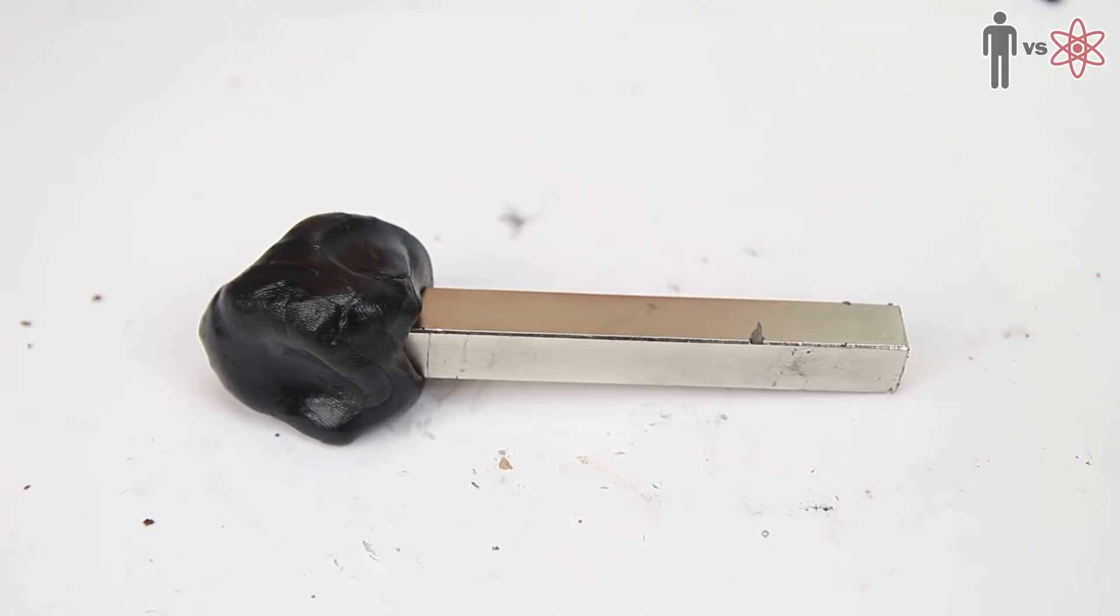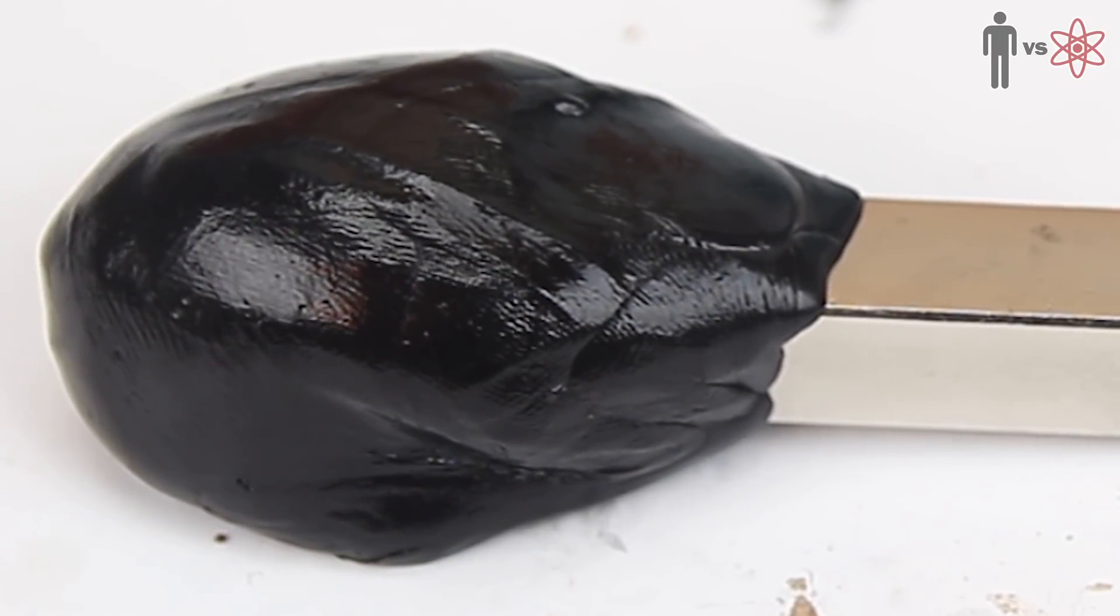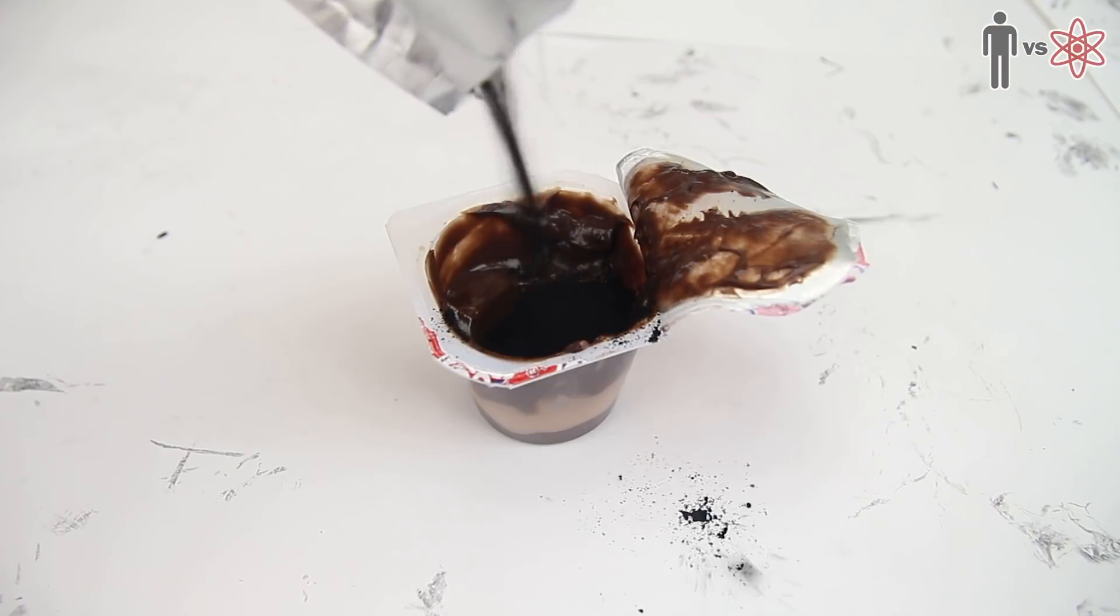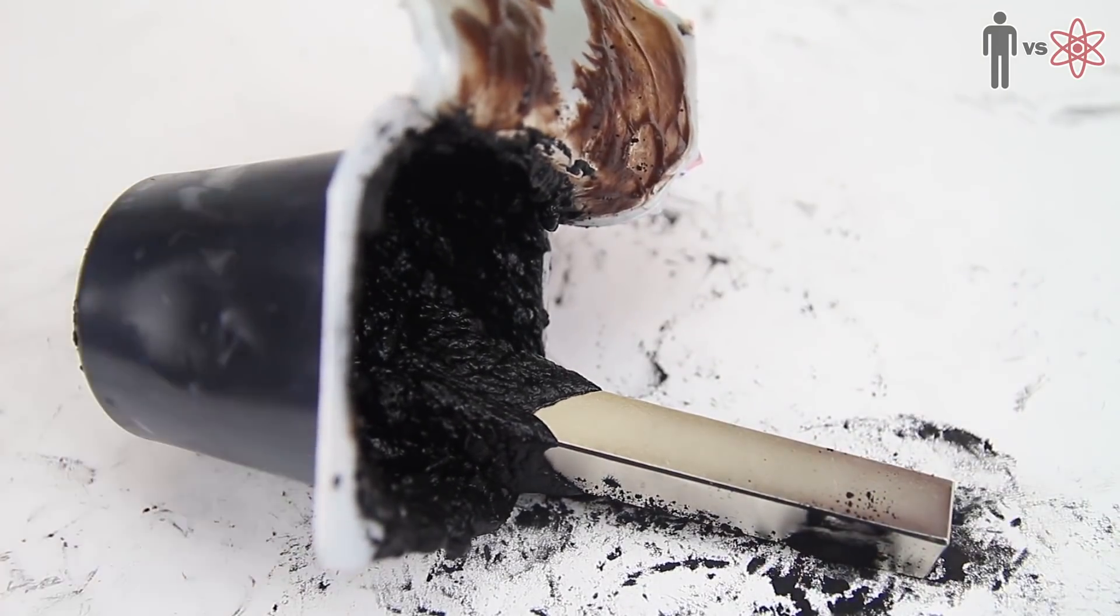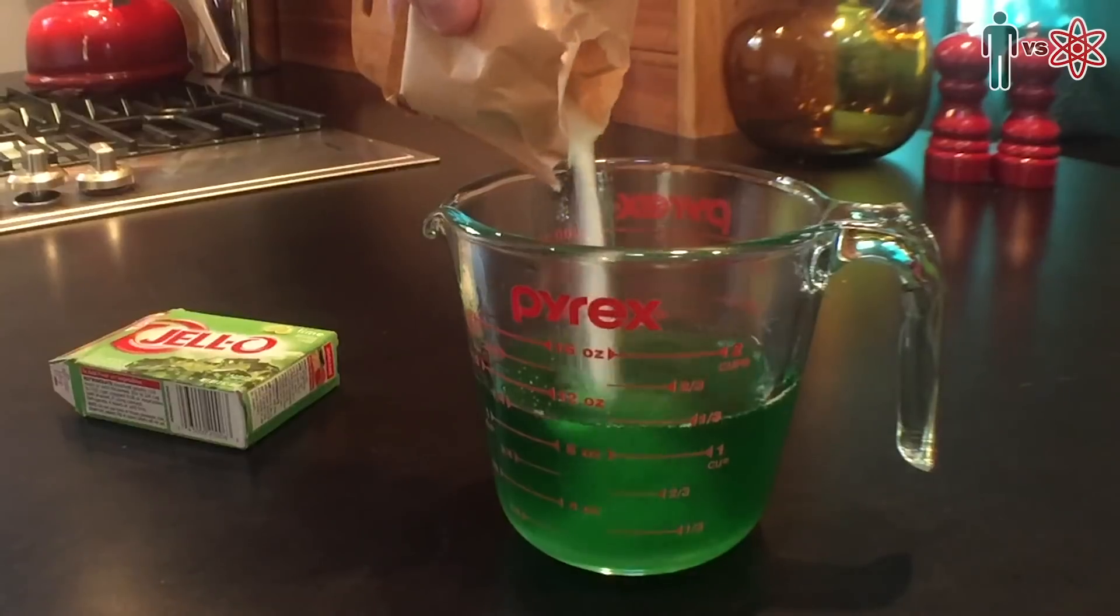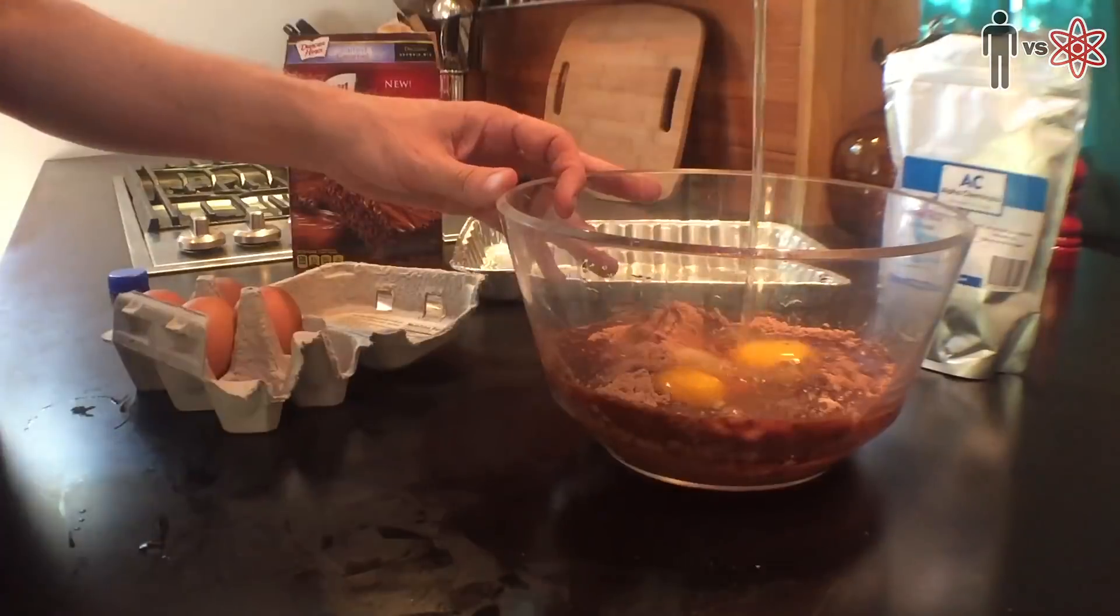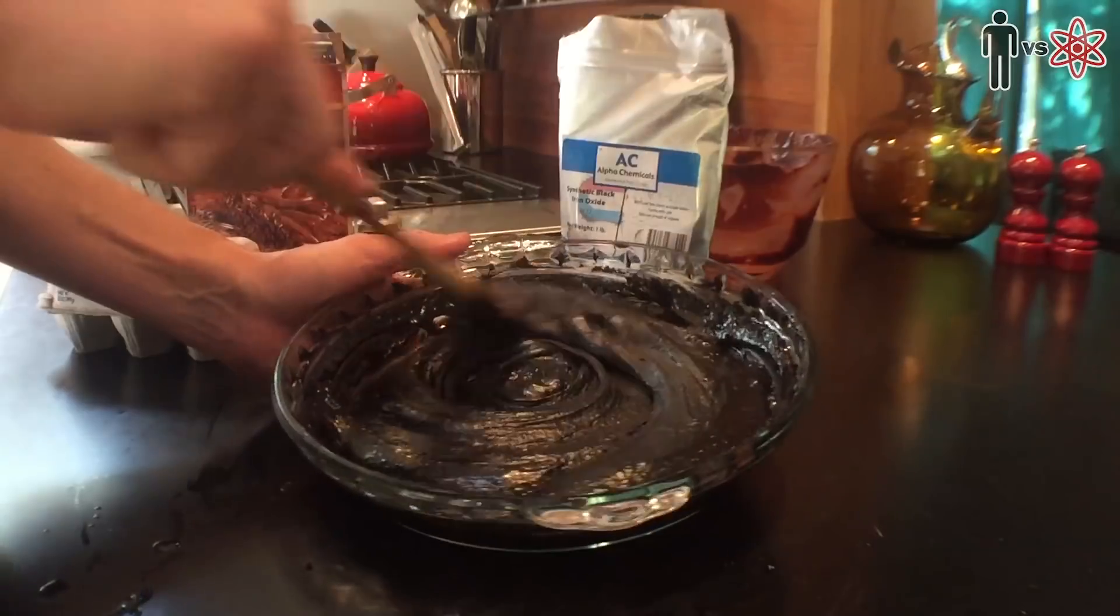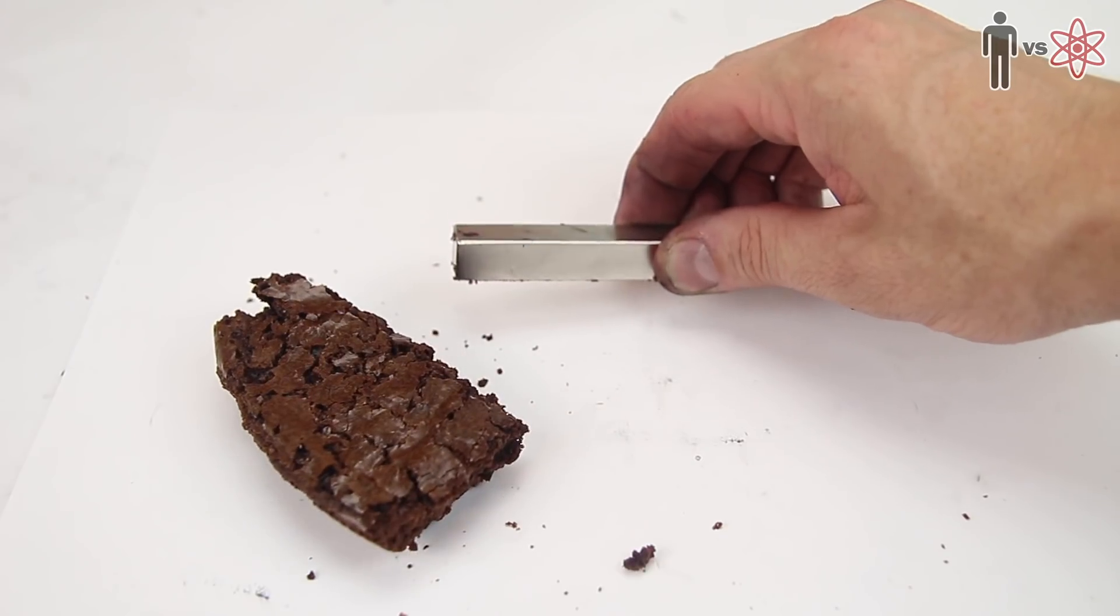Test number two, watch it engulf a magnet like some sort of crazy alien creature. That's scary. Test number three, infuse iron oxide powder into a snack pack and make magnetized pudding. Is this really necessary? Come on. Test number four, make magnetized jello? Alright, that's just ridiculous. Test number five, make some magnetized brownies. Holy shit, that's pretty awesome. Magnetized brownies, who would've thought? And they're pretty delicious.